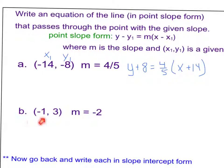Another example. Here is my point, here is my slope. So y minus, this is my y sub 1, so minus 3 equals my slope, which is negative 2, times x minus, this is my x sub 1, negative 1, so x plus 1.